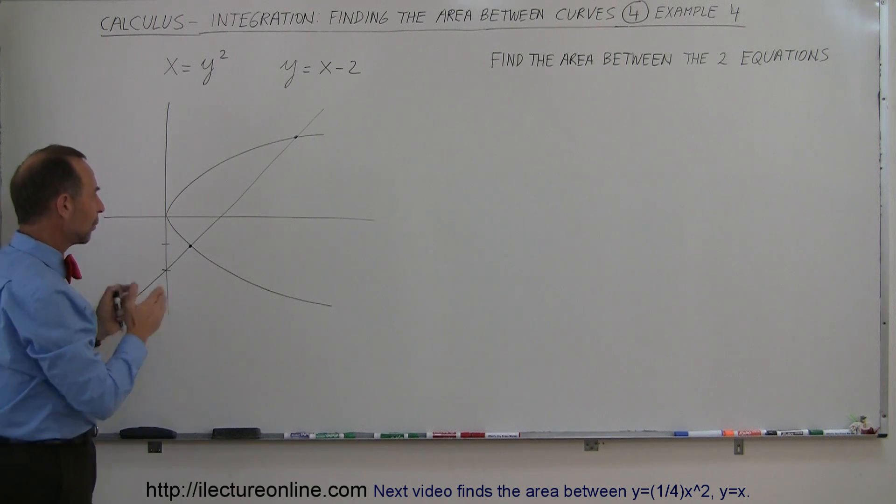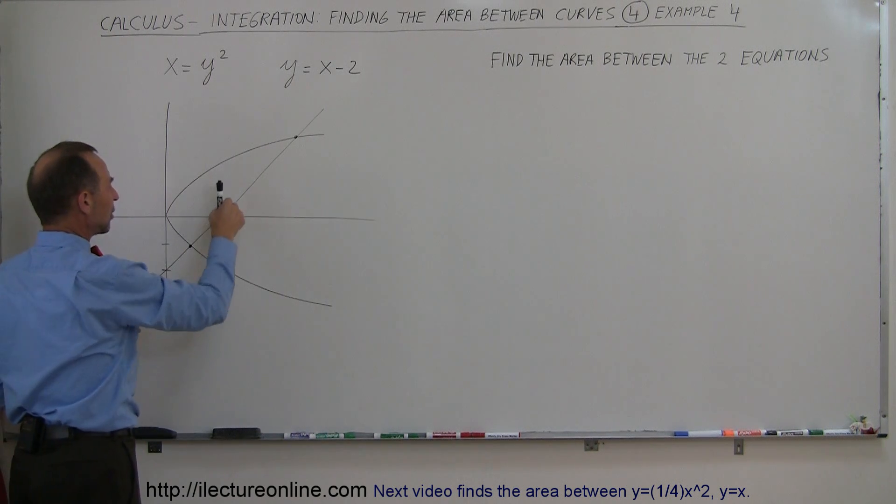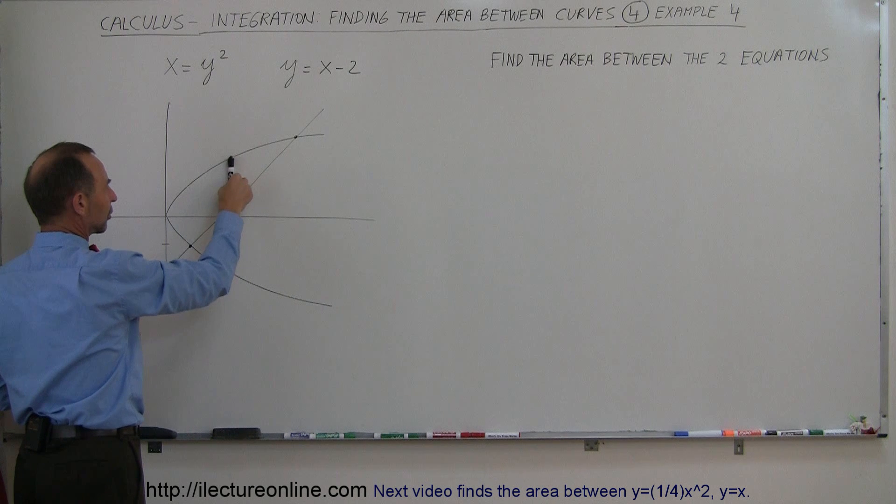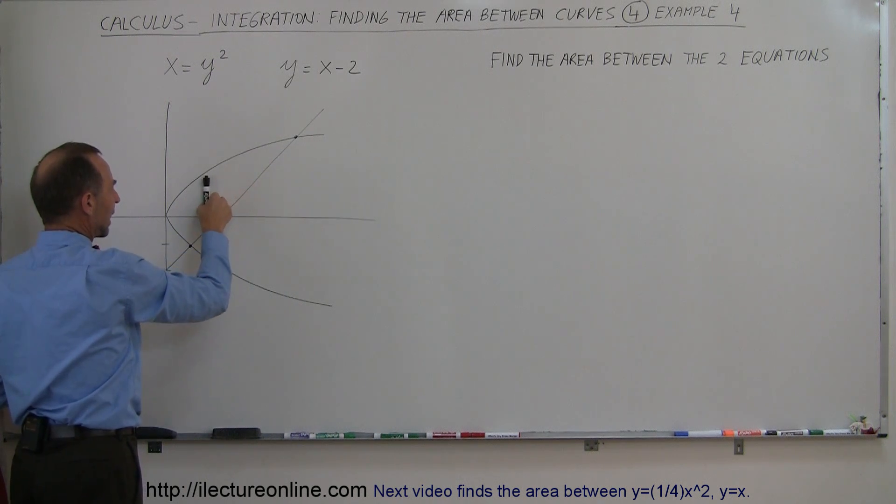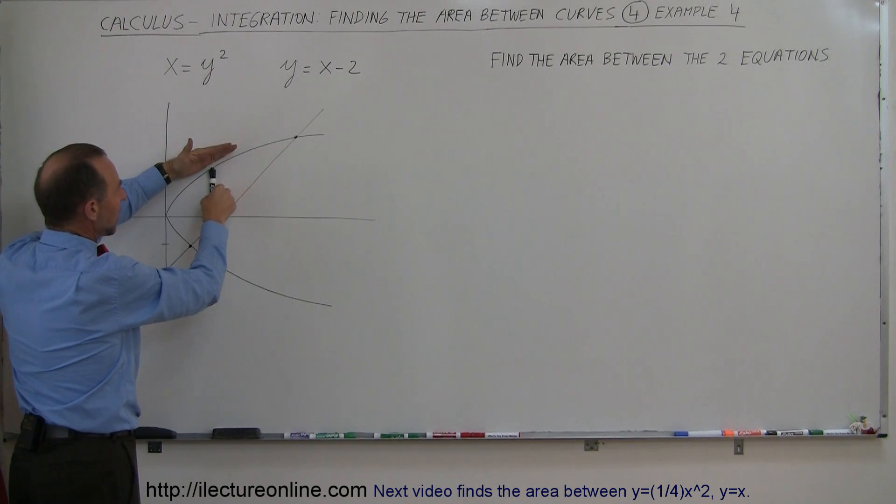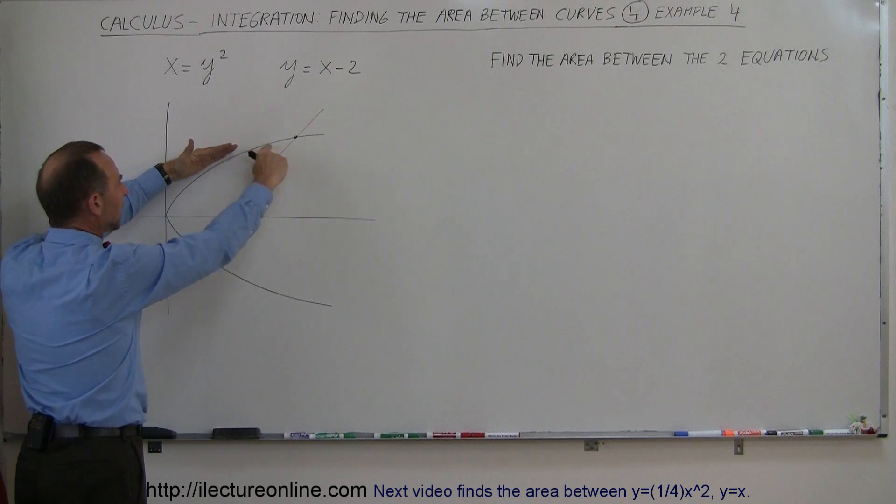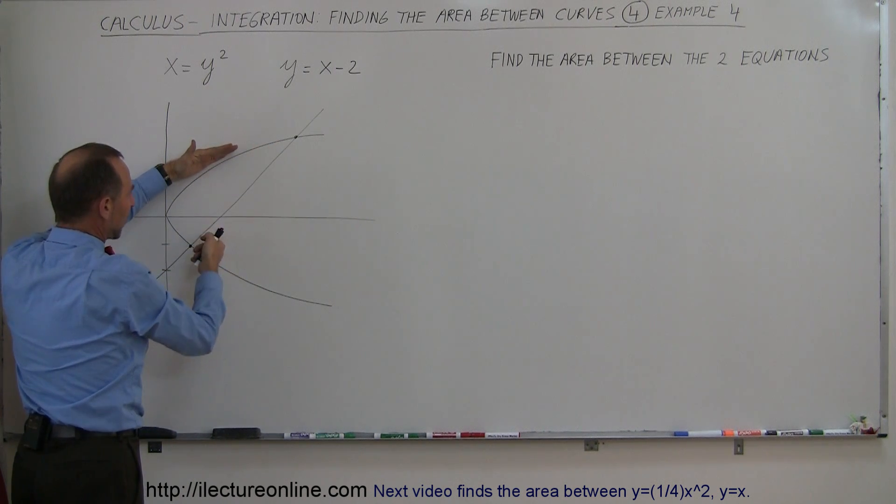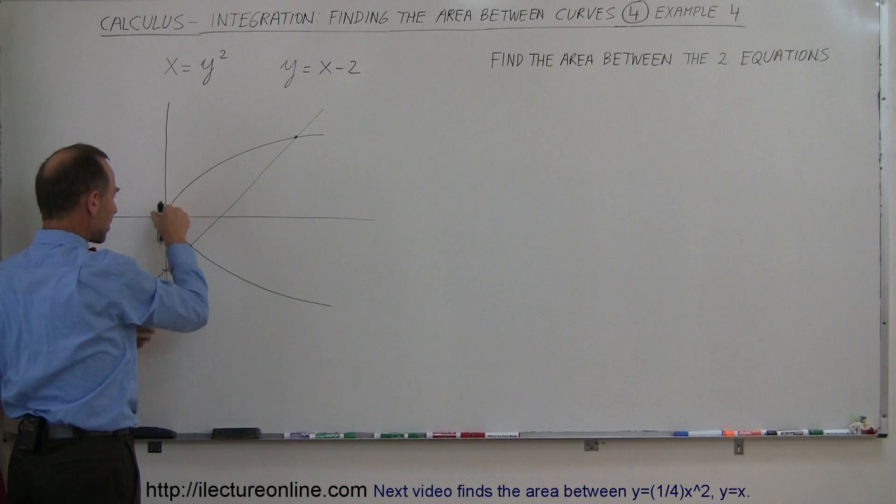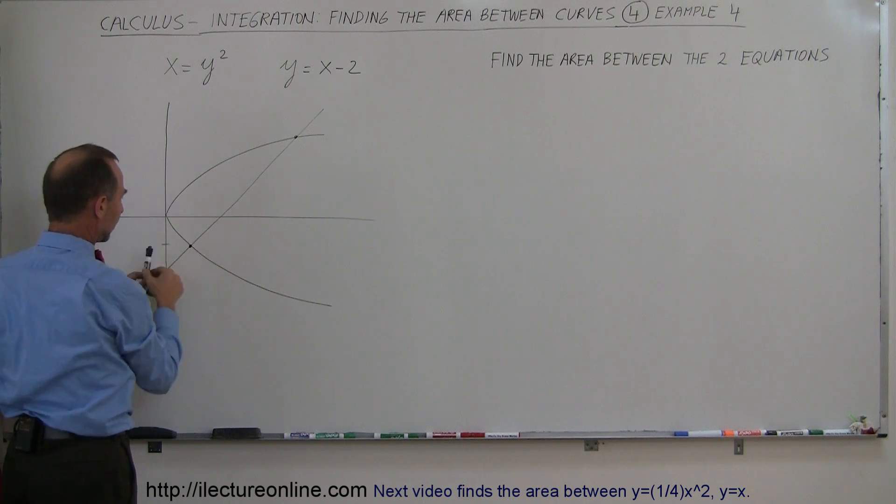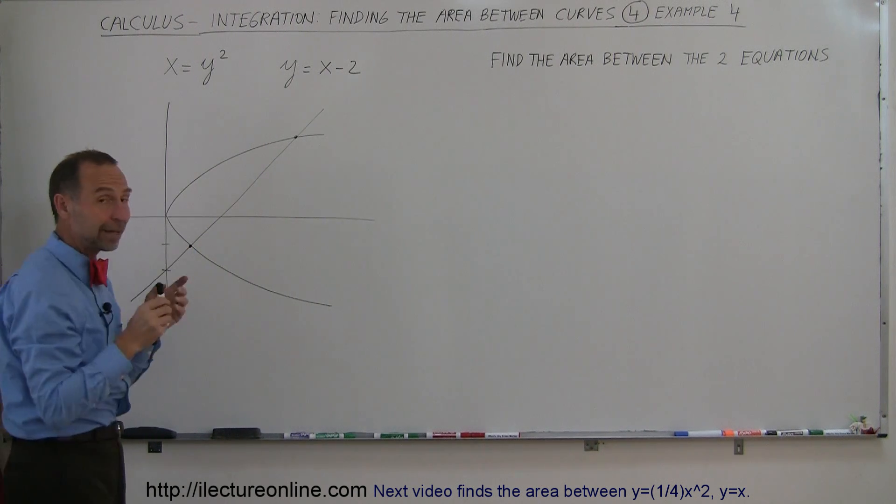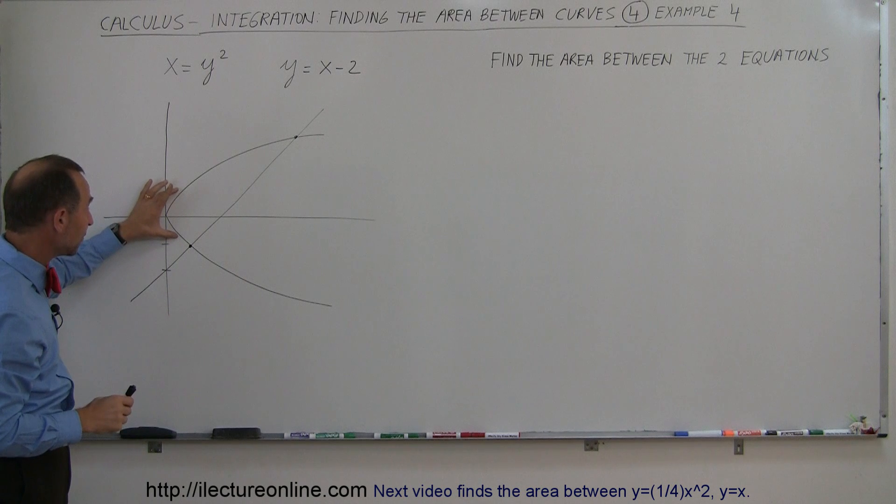Notice that the way it's situated like this, if you take your area element and you make it vertical, on this part of the area the top of the area element would be bounded by this line and the bottom would be bounded by this line, but when you come across here, past this line right there, notice that the top and the bottom of your area element are now bounded by the same equation.